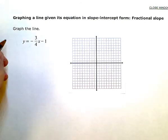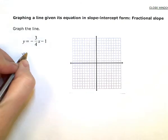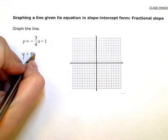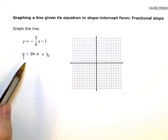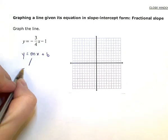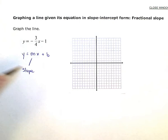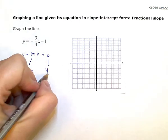So this equation is in slope-intercept form. Our general formula is y equals mx plus b. The m represents the slope of my line, and the b is the y-intercept.